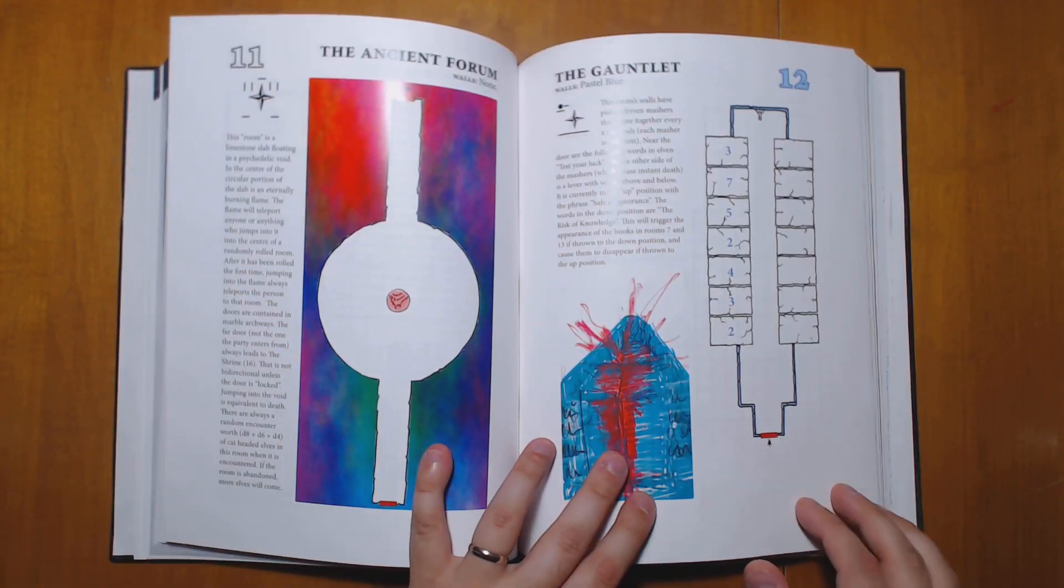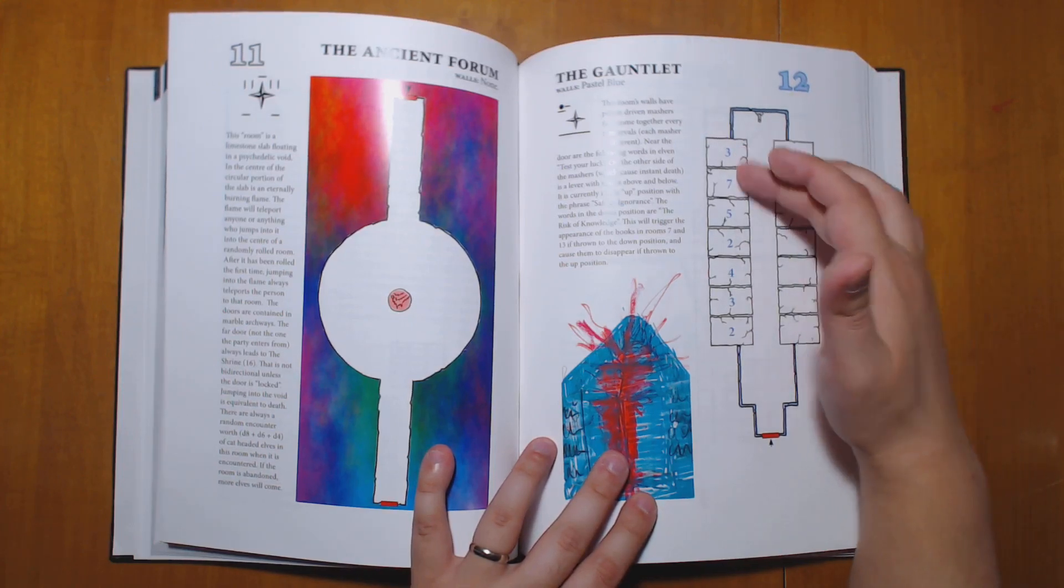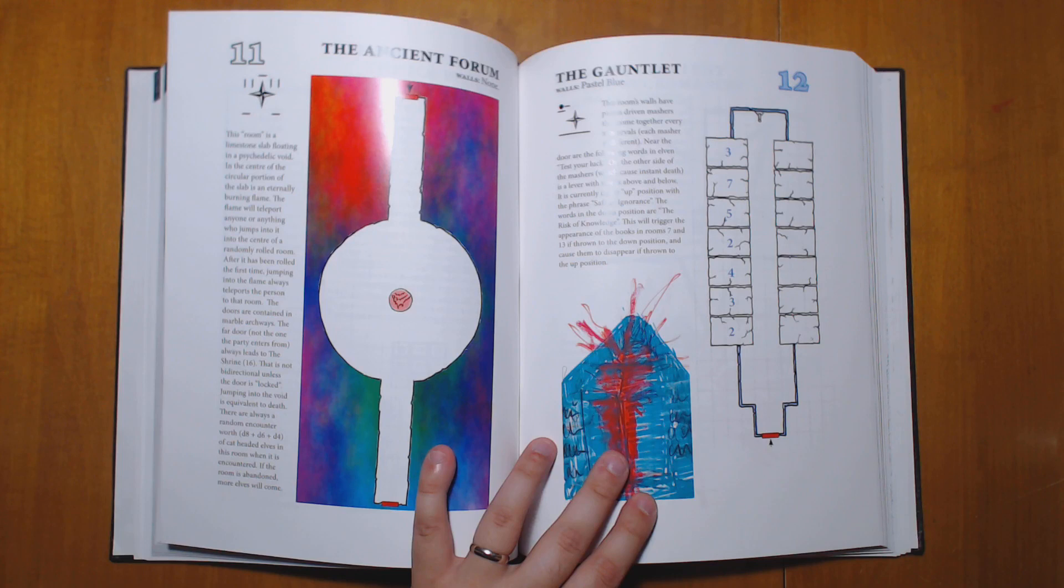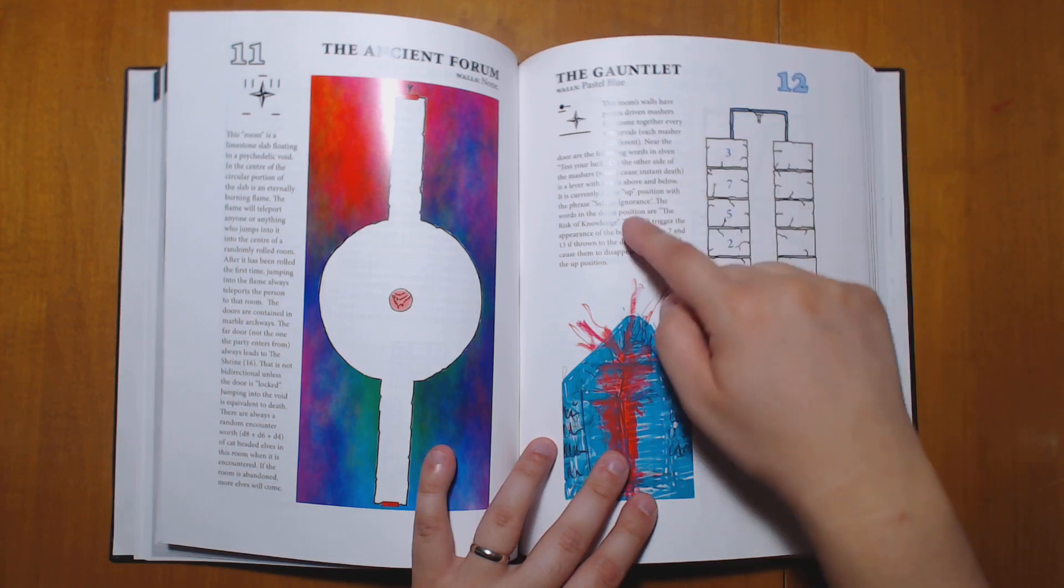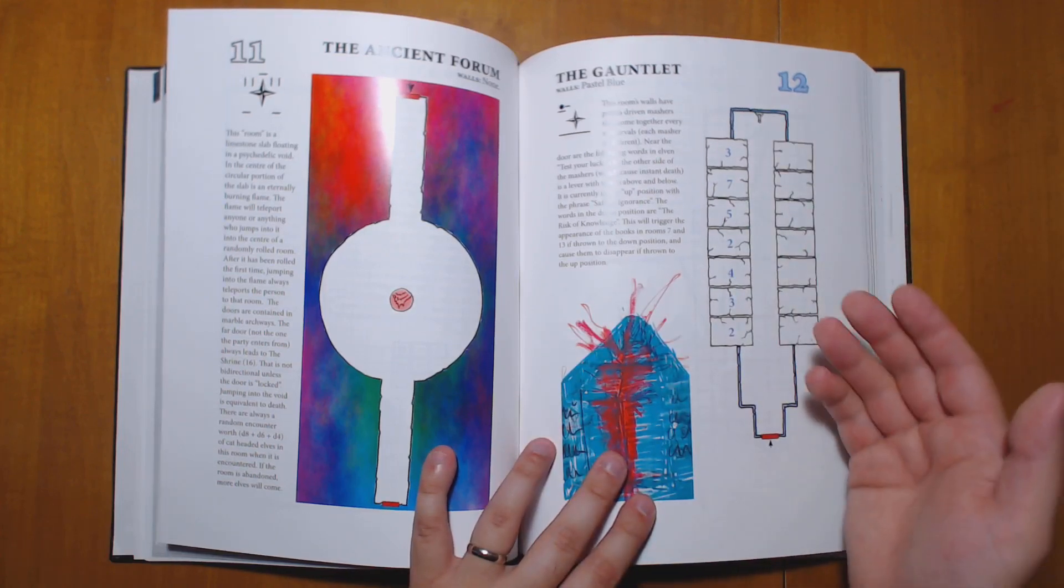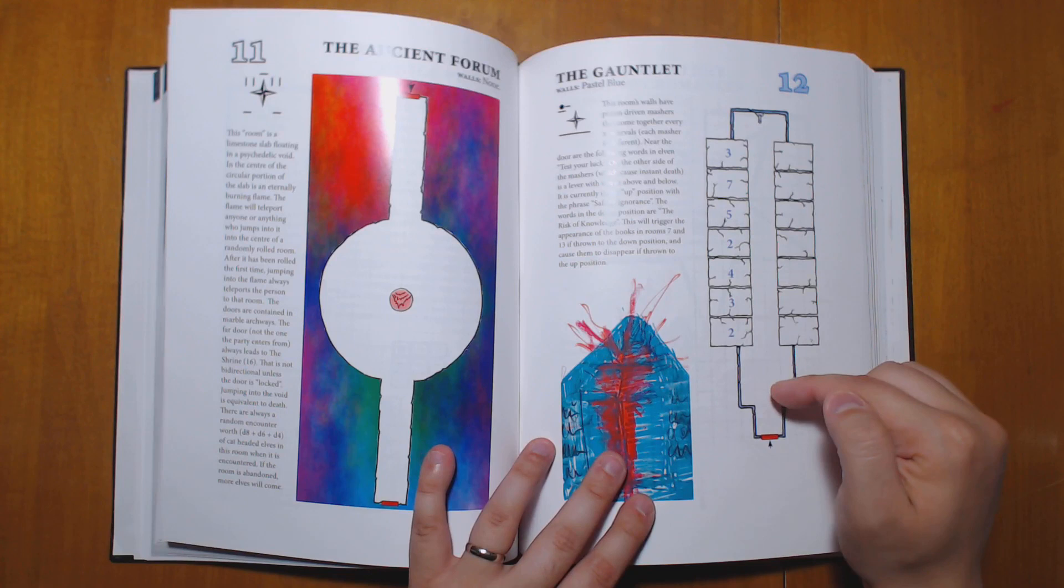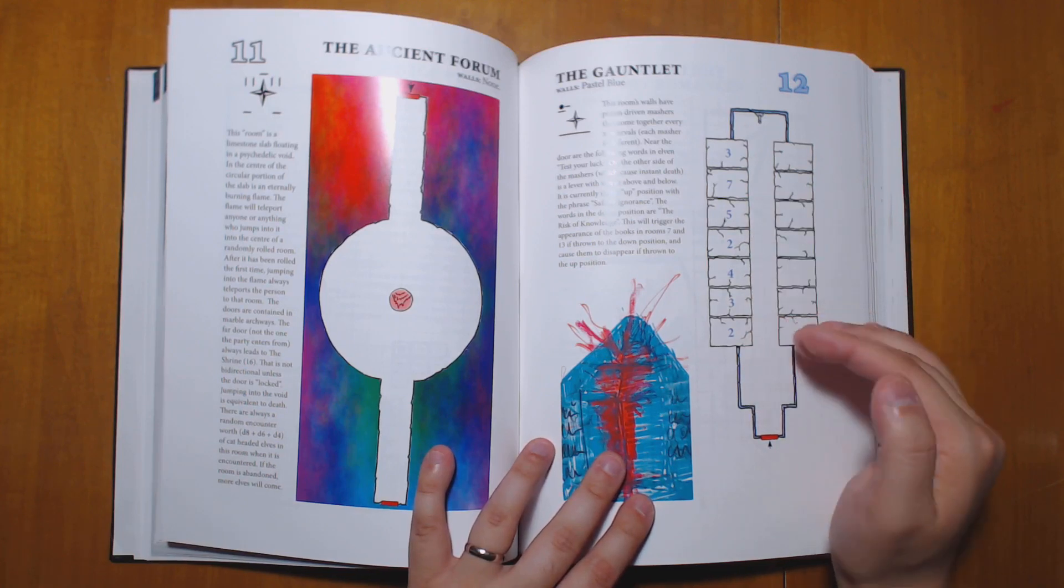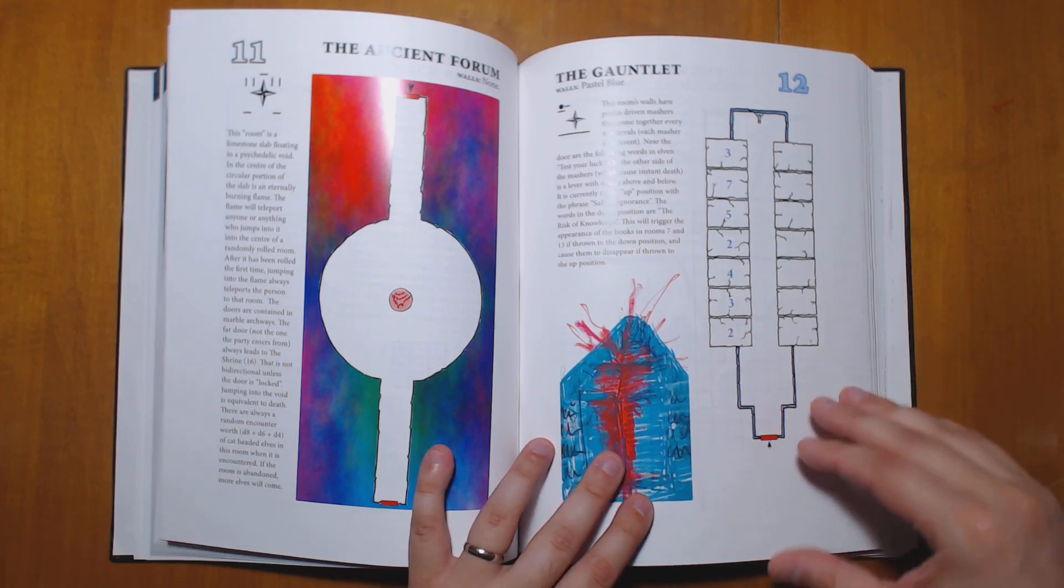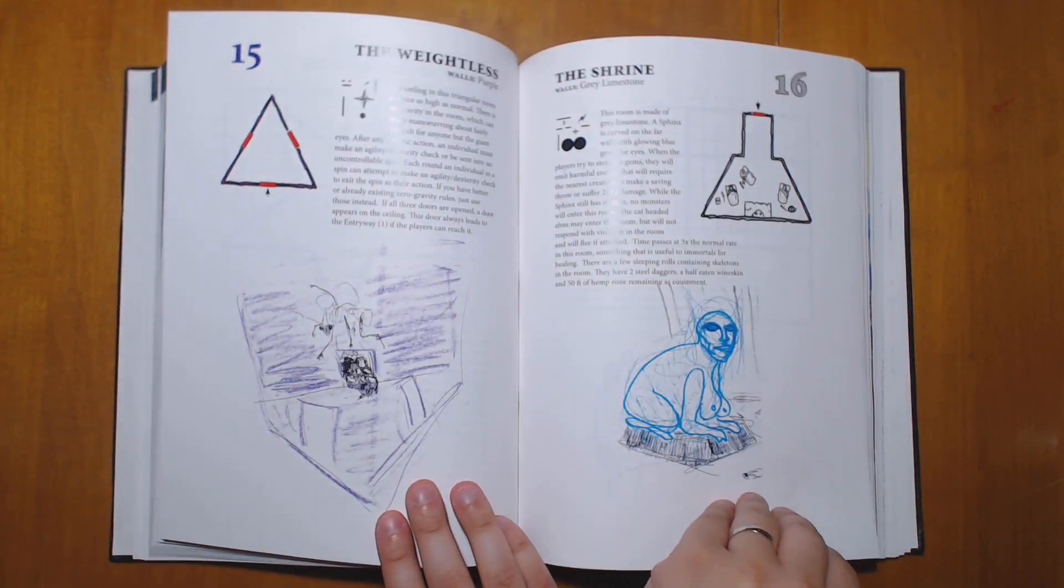A variety of weird enemy types that have been trapped into this dungeon. We have some weird puzzles, like this room's walls have piston-driven mashers. They come together every X intervals. Every masher is different. Near the door are the following words in Elven, test your luck. On the other side of the mashers, which causes instant death, is a lever with the words above and below, currently in the up position. So this can affect another room. So you have to run this gauntlet. And I suppose every interval, maybe like every couple seconds, the game master could keep track of which one was currently smashing. So the players could have to watch it for a while and try and figure out the best way through. Or perhaps use some spell or items to try and jam the blocks. Lots of great little puzzles like that all spread around here, along with some very weird and unusual monsters.